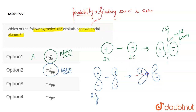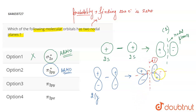So there will be two nodal planes here. The first nodal plane will be here, and the other nodal plane will be here. Both nodal planes are going to be perpendicular to each other — at 90 degrees to each other. So π*2py consists of two nodal planes, and this is the correct answer for the question.